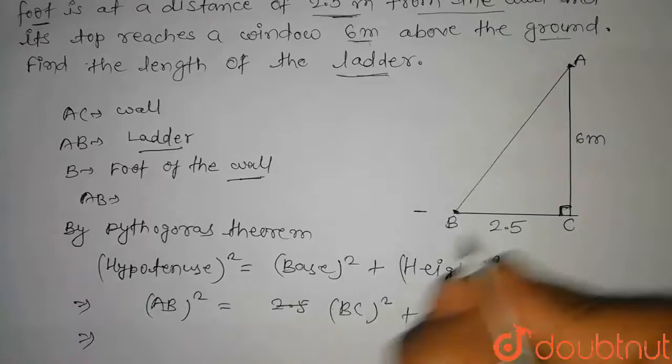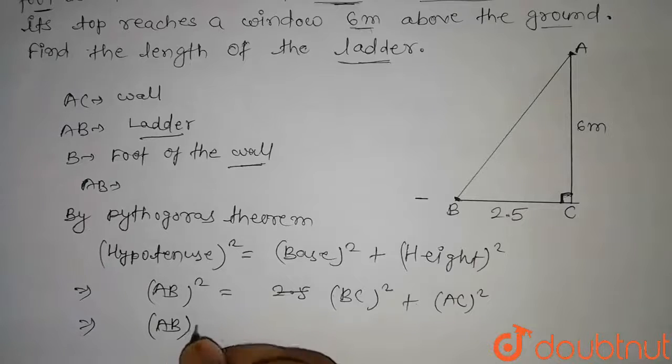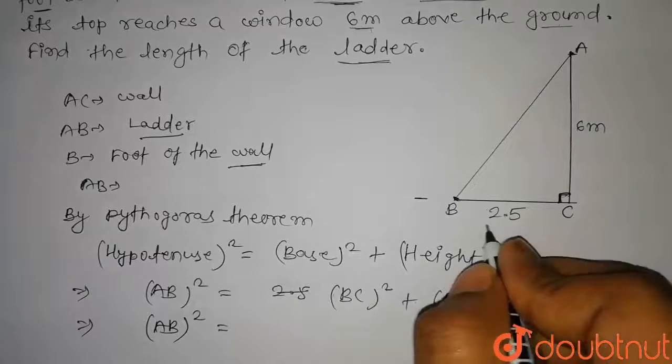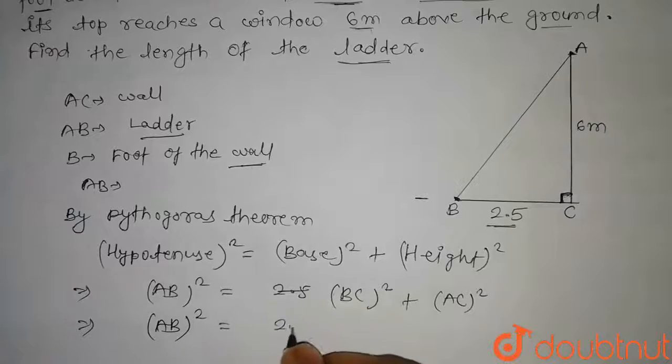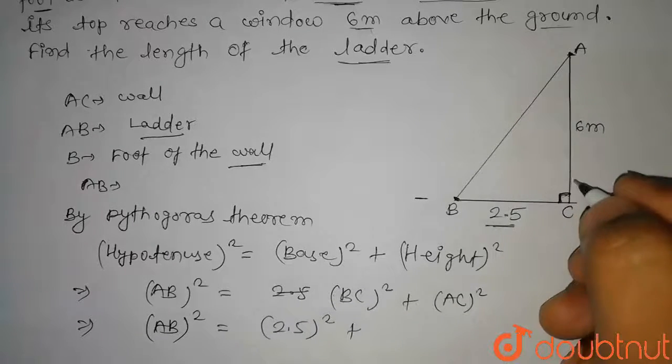Now we have AB to find. AB squared will be equal to BC squared. Here BC equals 2.5, plus AC squared. Here AC is 6 meters, so it is 6 squared.